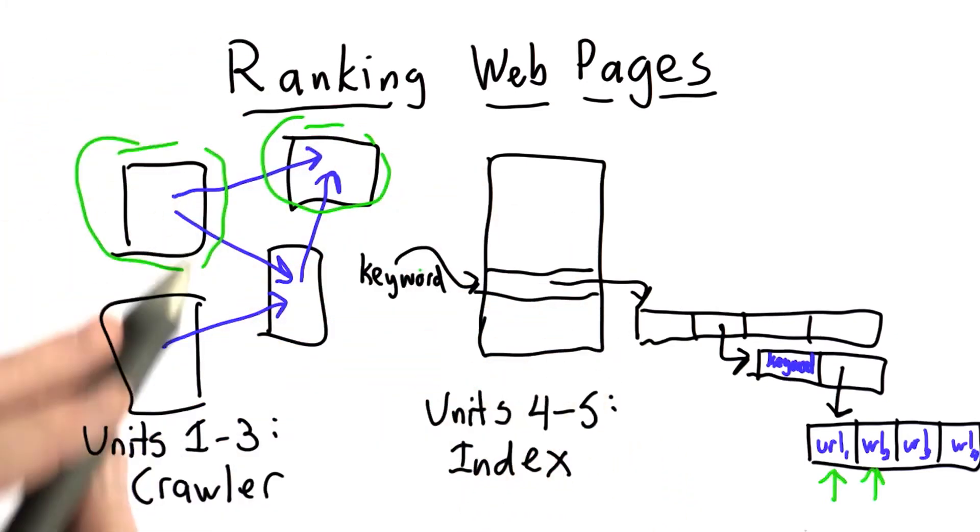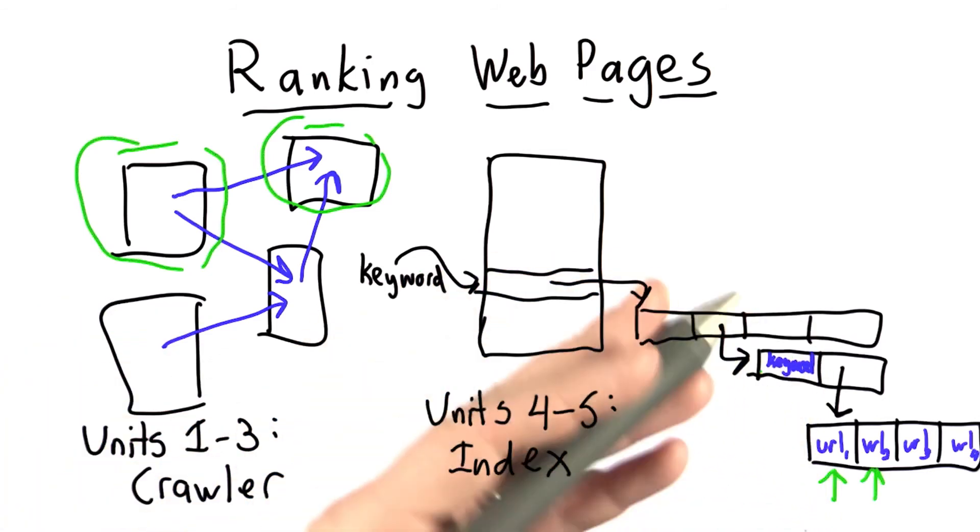When the web was really small, which was quite a while ago now, this was sort of okay. There were only a few pages that might match a given keyword, and you could look through them all and decide which one you wanted.